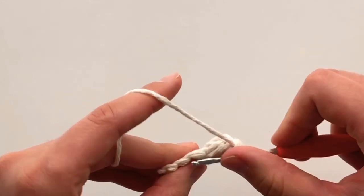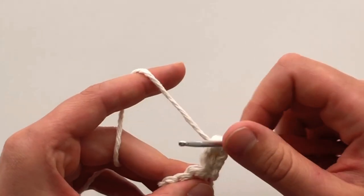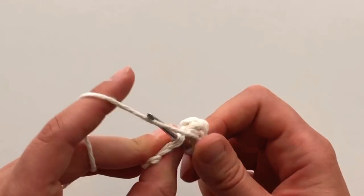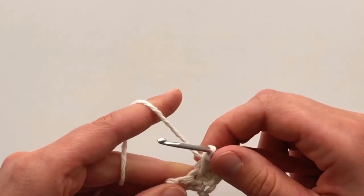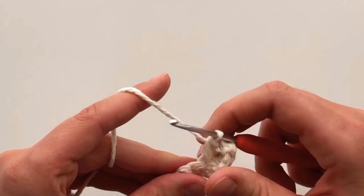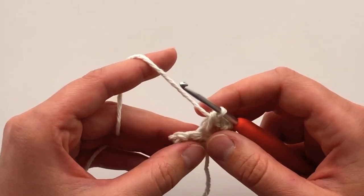Single crochet into the next stitch. The next stitch is a modified bobble again, so we'll go through this one slowly.